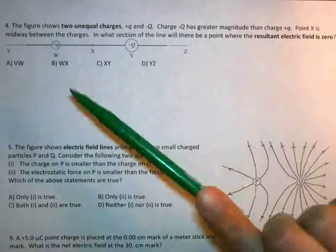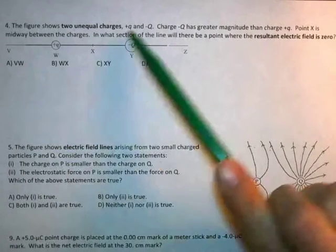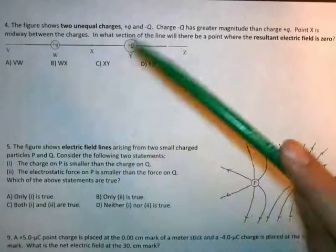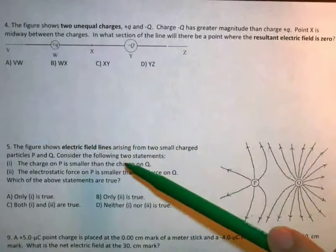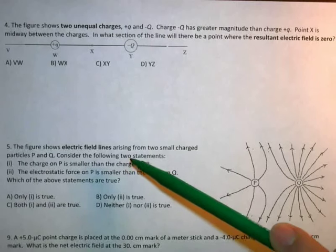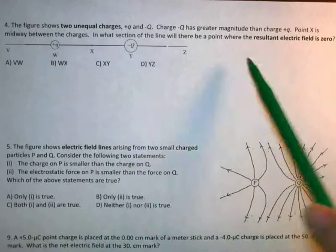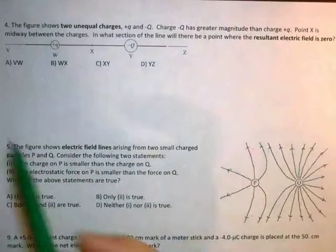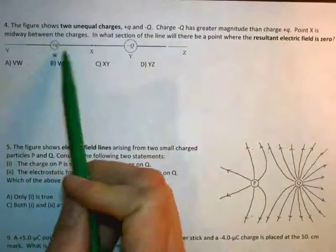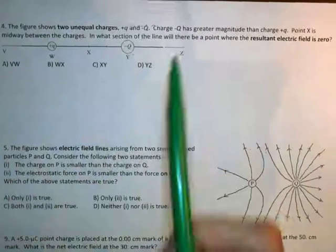So the first one is this. We have two unequal charges, the positive small charge over here and a negative large charge over here. And we are looking for where there is an electric field of zero. So we're looking in this range here, in that range here, three or four.